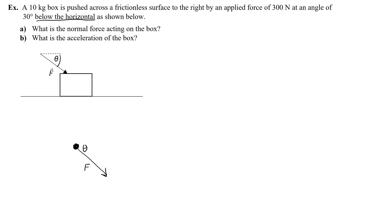I'll turn this into components. Theta is still adjacent to the x component, so I write F cosine theta. The y component is opposite the angle, so I write F sine theta — but this time it points downward. If you get confused, just think of it as a right triangle.